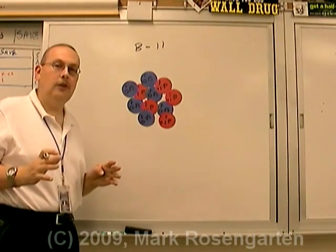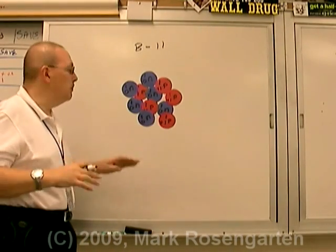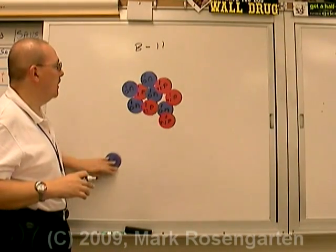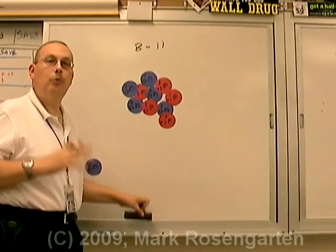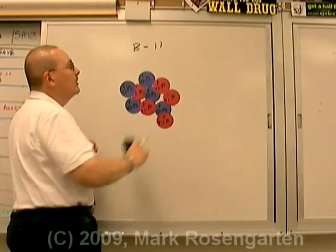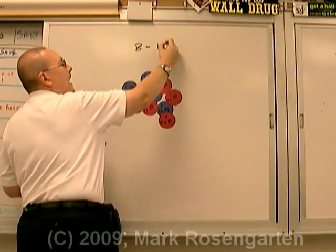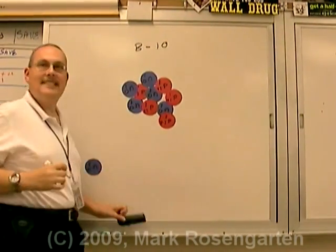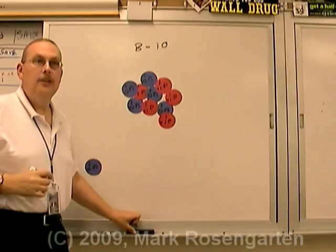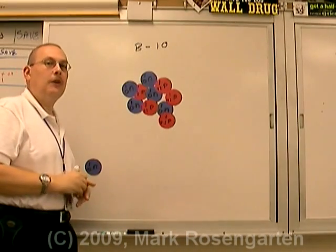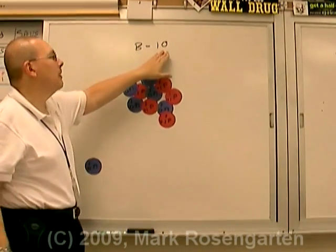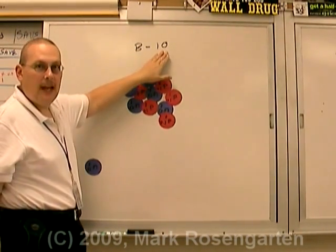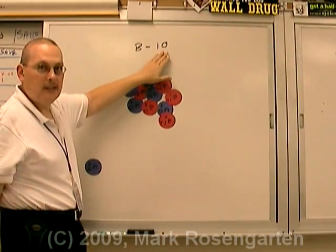If, on the other hand, we removed a neutron, now our isotope would weigh one less. Our isotope would be identified as boron-10. So the isotope can also be identified by what the mass of that isotope is.